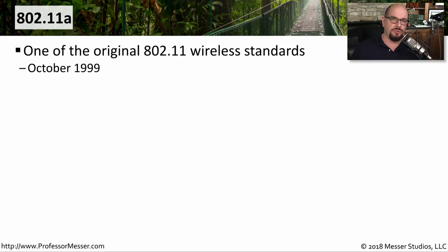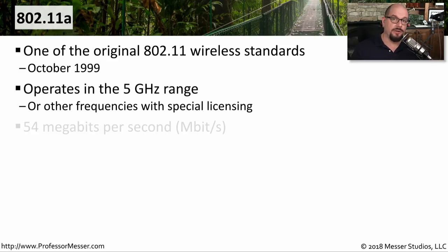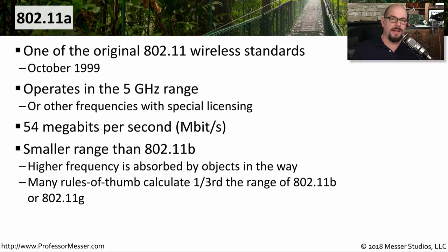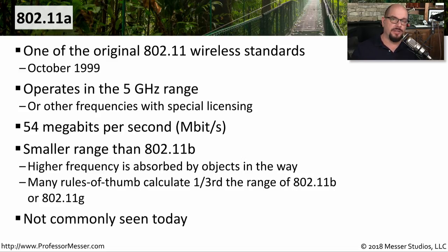When the 802.11 standards were released, two standards were released simultaneously. One of these is the 802.11a standard, one of the original standards released in October of 1999. 802.11a operated in the 5 gigahertz range and gave us throughputs up to 54 megabits per second. Because 802.11a was using 5 gigahertz frequencies, it tended to have a smaller available range than the 802.11b standard. The 802.11a standard has been replaced by newer 802.11 standards, so you don't tend to see much 802.11a traffic on a network today.